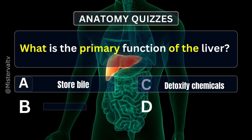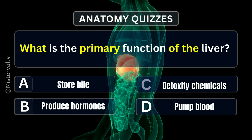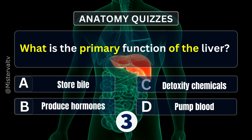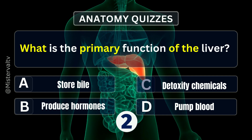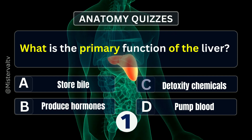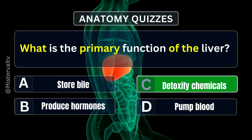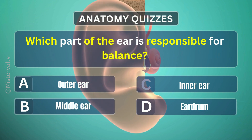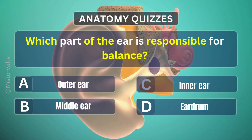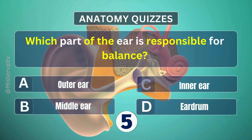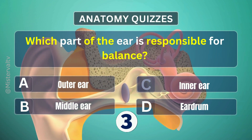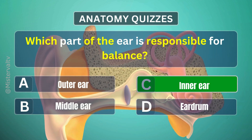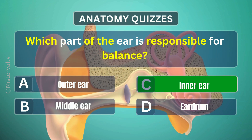What is the primary function of the liver? Answer. C. Detoxify chemicals. Which part of the ear is responsible for balance? Answer. C. Inner ear.